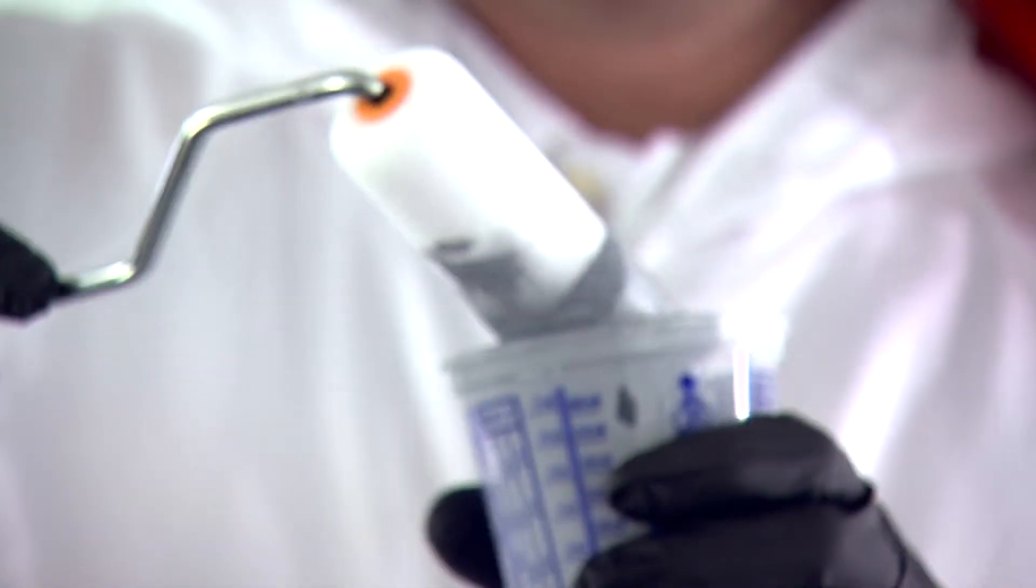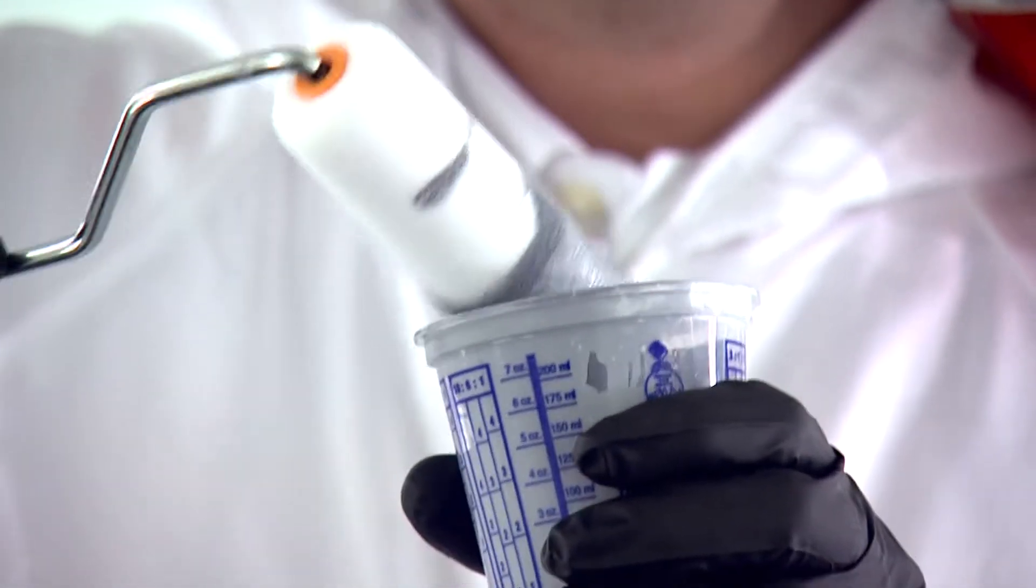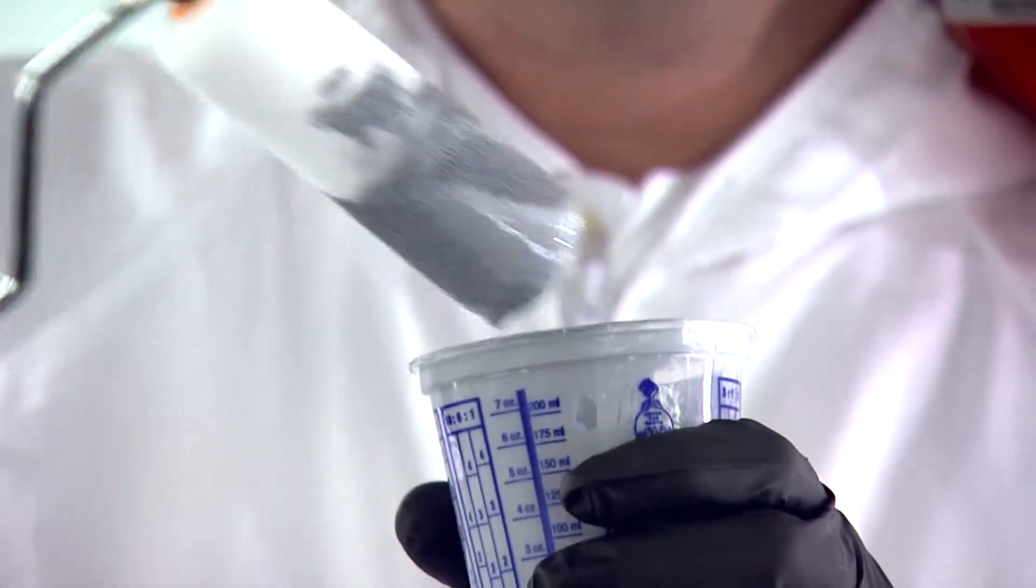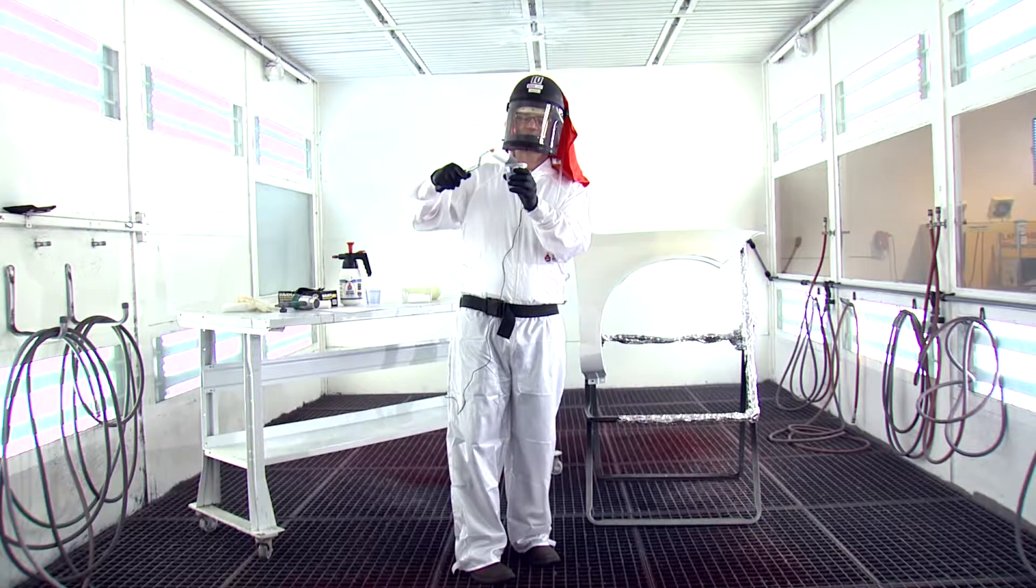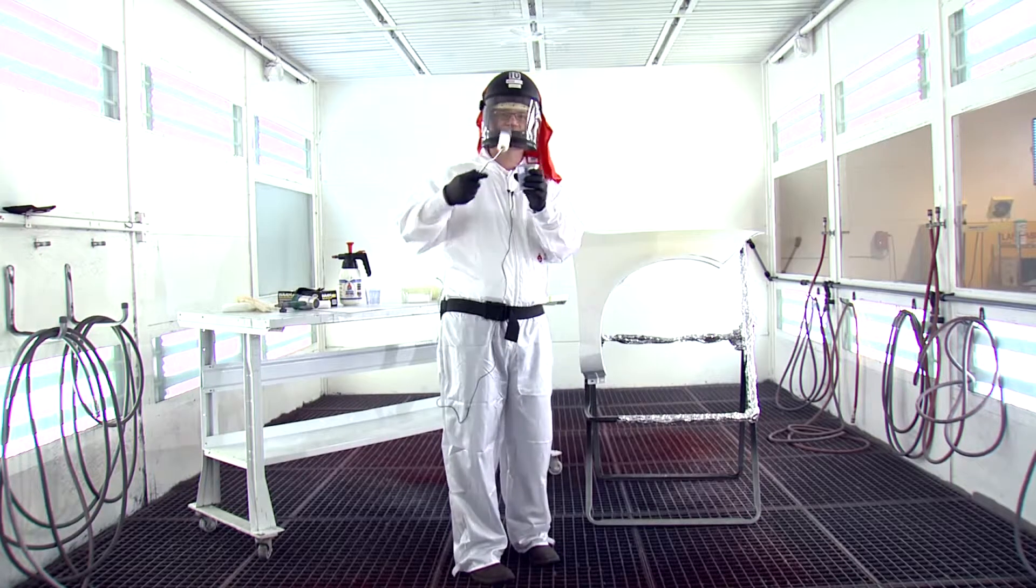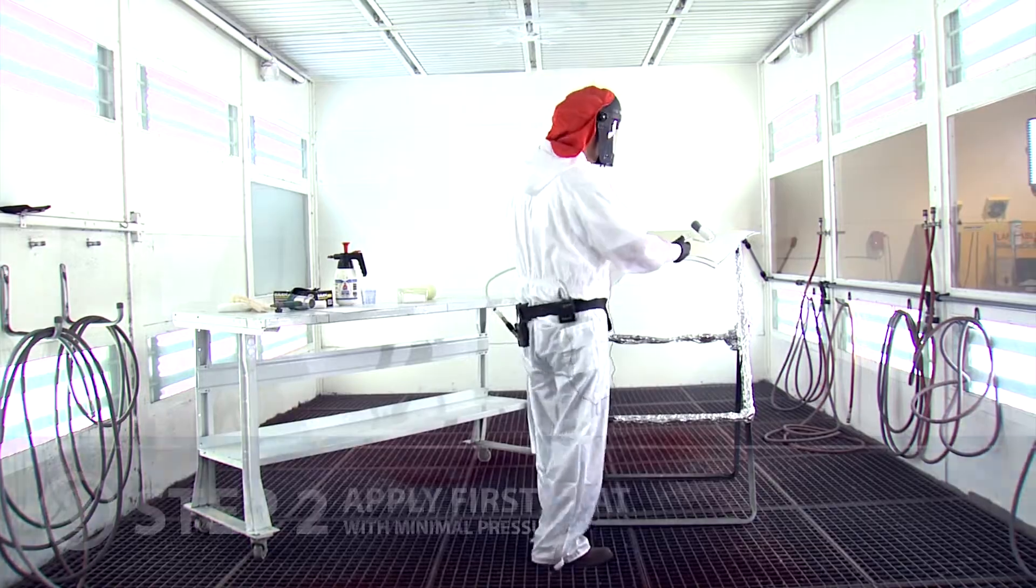When we mix it up, I'm going to be using a cup like this, something in a small format. Before I start rolling it on, I'm going to clean a little bit of this up on the brim of the cup, and I'm going to start rolling our first coat of primer on.